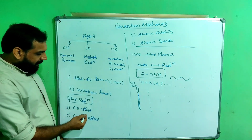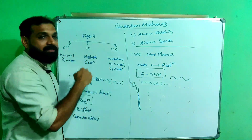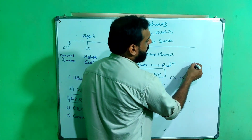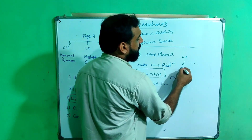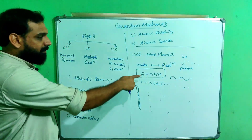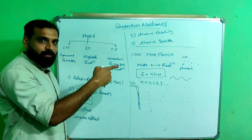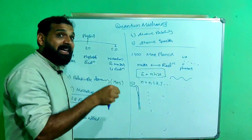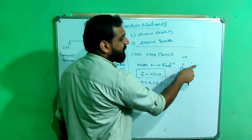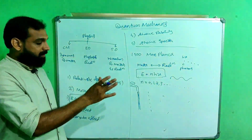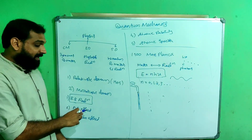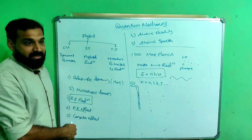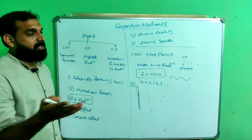Later on, in 1905, Einstein explained the photoelectric effect based on Planck's proposal. Einstein told that light actually consists of small packets of energy called h·ν, and these particles were called photons. He suggested that the photoelectric effect can also be explained using this phenomenon, proposing that light consists of minute packets of energy called photons, each with energy h·ν. He successfully explained the photoelectric effect, and Einstein obtained the Nobel Prize for that explanation. Later, Compton used the same principle to explain the Compton effect — we will discuss all these effects in detail in coming sessions.